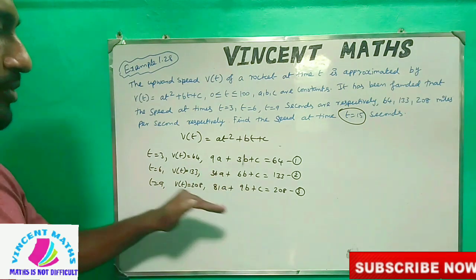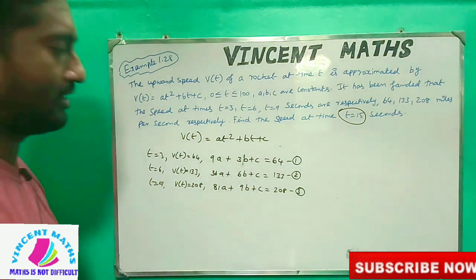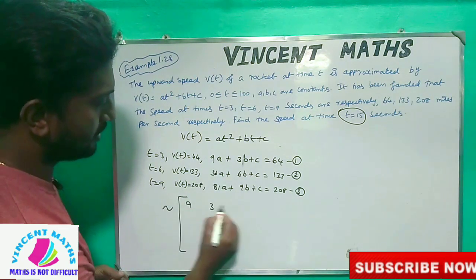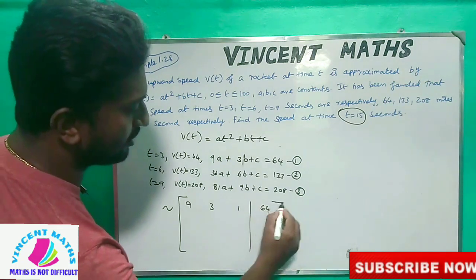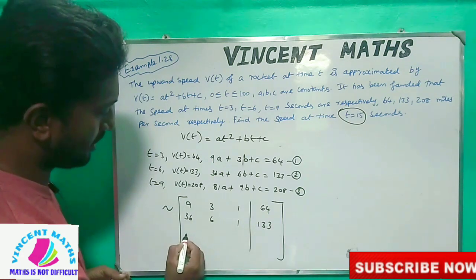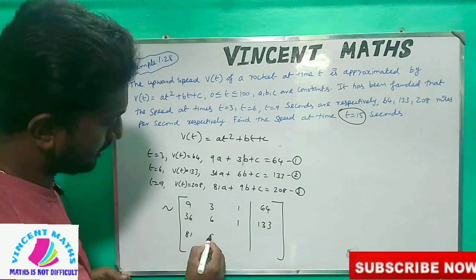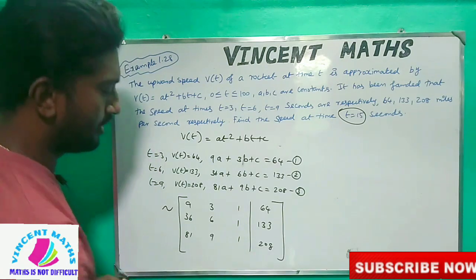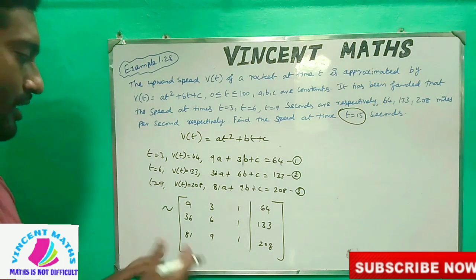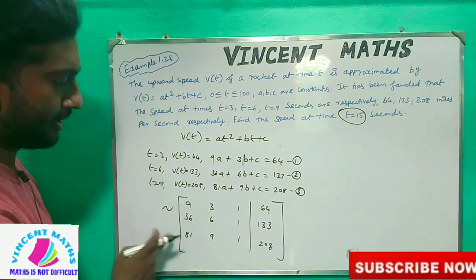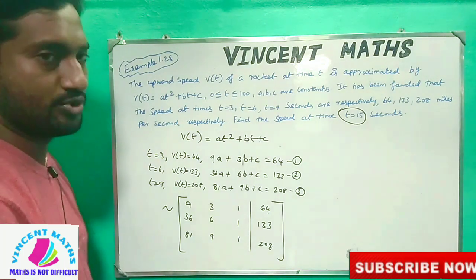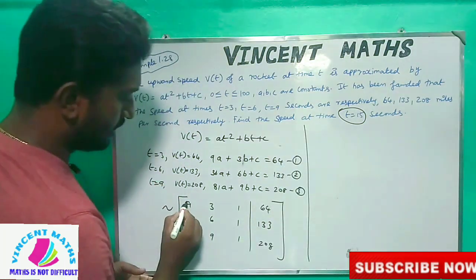Now we have 3 equations. We write the augmented matrix with first row, second row, third row containing the coefficients. We need to find A, B, C values. We need to convert this into an upper triangular matrix — that means we need zeros in the lower entries of each column.